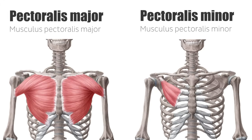The pectoral muscles consist of the pectoralis major and the pectoralis minor, which are fan-shaped muscles of the shoulder. They shape the anatomy of the breast. The pectoralis minor lies under the pectoralis major and both form the anterior wall of the axilla, where they can be palpated.